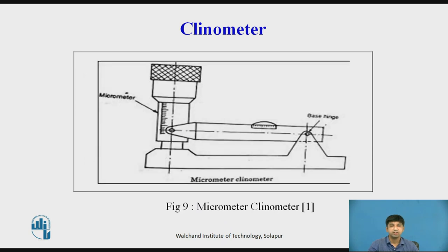Micrometer Clinometer. In this type, the spirit level is attached at one end of the barrel of a micrometer, and the other end of the spirit level is hinged on the base. The base is placed on the surface whose inclination is to be measured. The micrometer is adjusted until the level is horizontal. This type of clinometer is used for measuring small angles.